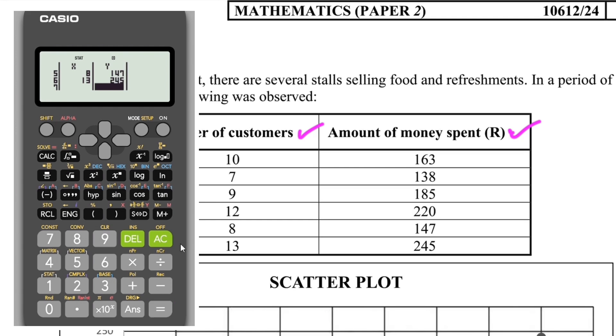I press equals a couple of times and then I press AC. After that I will press shift and then I press 1. You can see above 1 we have stat there. So I press 1 and then I go to 5 for regression. When I press 5, you can see that I have a, which is what I'm looking for, and I have b, which is another value that I'm looking for. So let me press 1 to access the value of a.